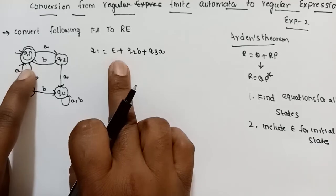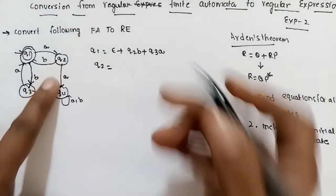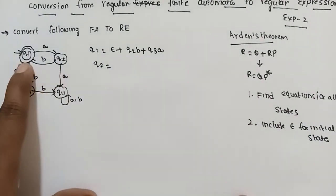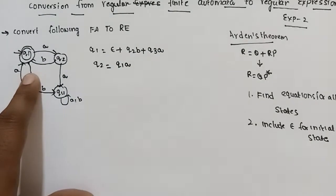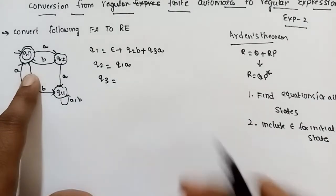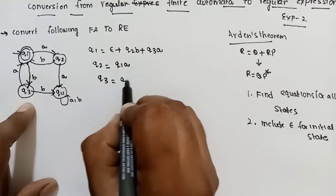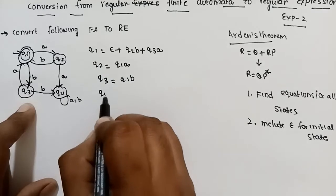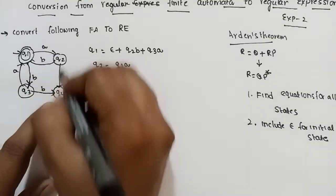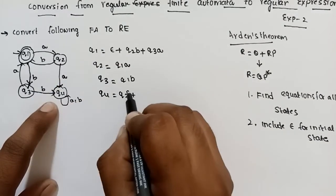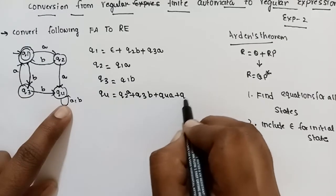Next, Q2. Q2 has incoming edges — Q1 on A. Next, Q3. Q3 is only Q1 on B. Next, Q4. Q4 equation is: Q2 on A plus Q3 on B plus Q4 on A plus Q4 on B.